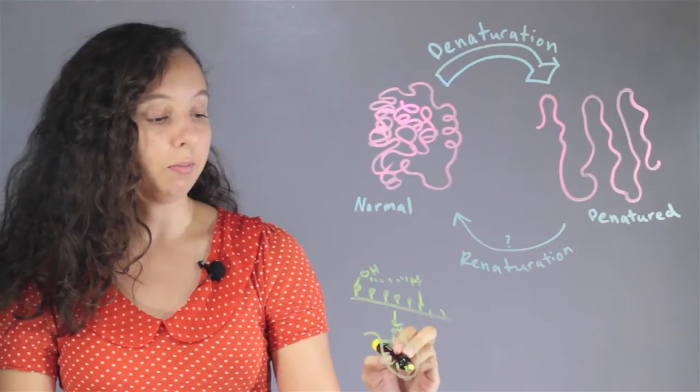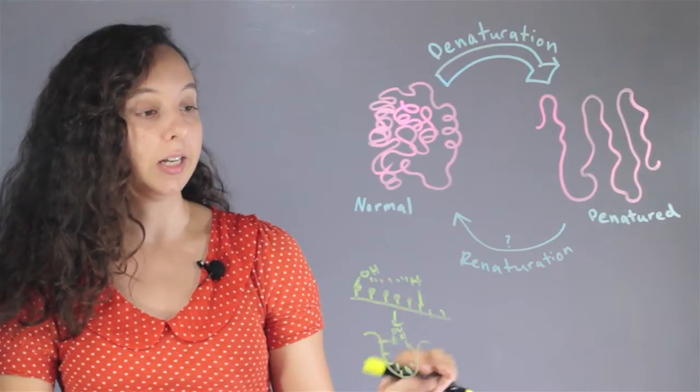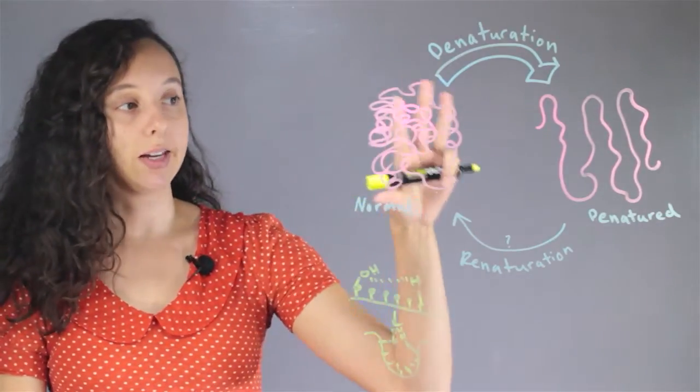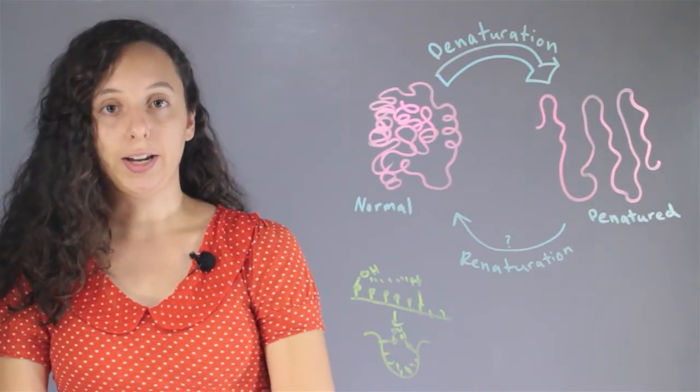And so there's thousands and millions of these happening, and all of these are very unique and make this enzyme shape. So that's how enzymes get their shapes.